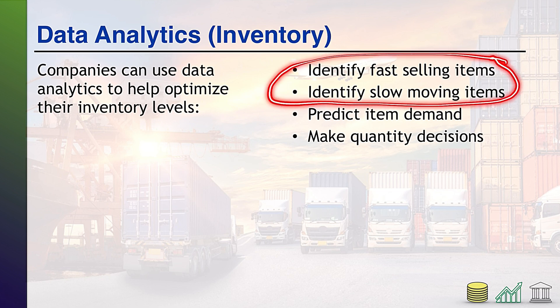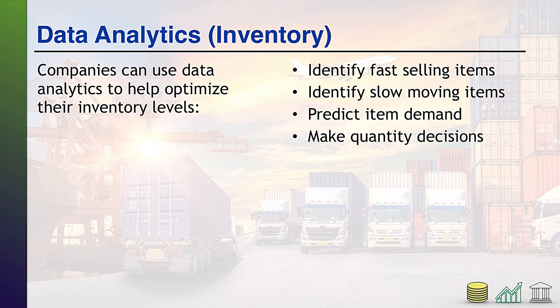This identification of fast-selling items and the identification of slow-moving items is basically our descriptive data analysis. We're identifying what's going on — what's moving fast, what's moving slow.